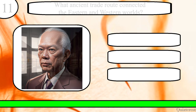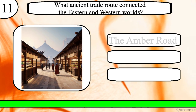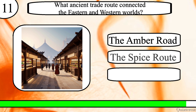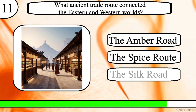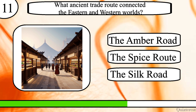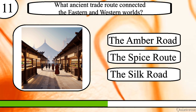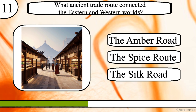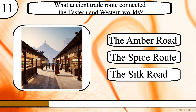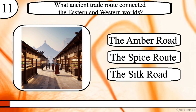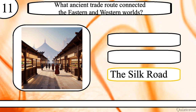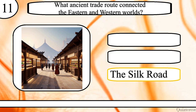Question 11. What ancient trade route connected the eastern and western worlds? The Amber Road, the Spice Route or the Silk Road? The correct answer is the Silk Road.